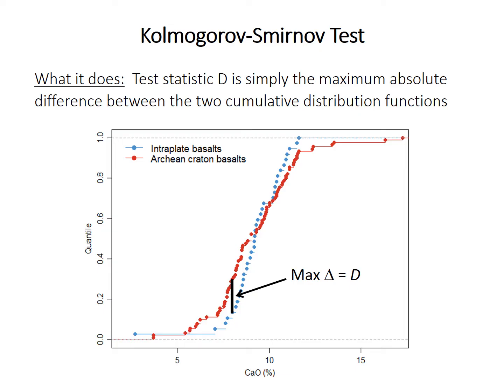If the null hypothesis is true and the samples do come from a population with the same distribution, D should technically be zero. Of course, in reality the two samples are randomly taken from their population, so even if the population is the same, they should differ somewhat. So we need the p-value — the probability of observing a D statistic at least as large as what we found, if the null hypothesis is true. Kolmogorov calculated that expected distribution of D under the null hypothesis, and the p-value is obtained by finding the area under that expected distribution for values at least as extreme as the observed D statistic.